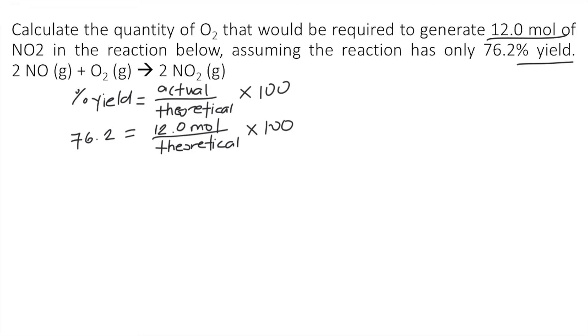So we are solving for the theoretical yield. So first, you divide both sides by 100. So 100 cancels on the right side.